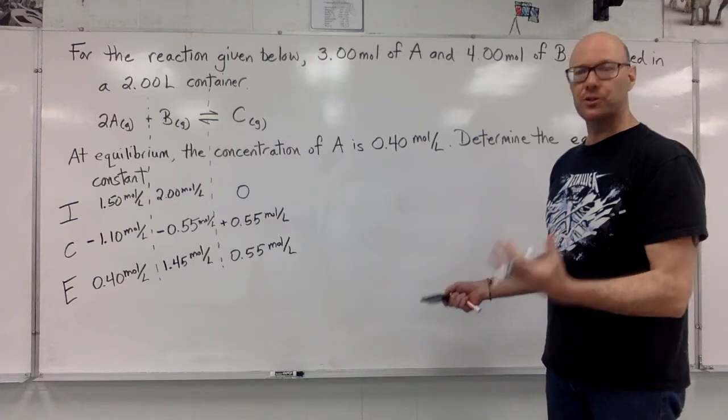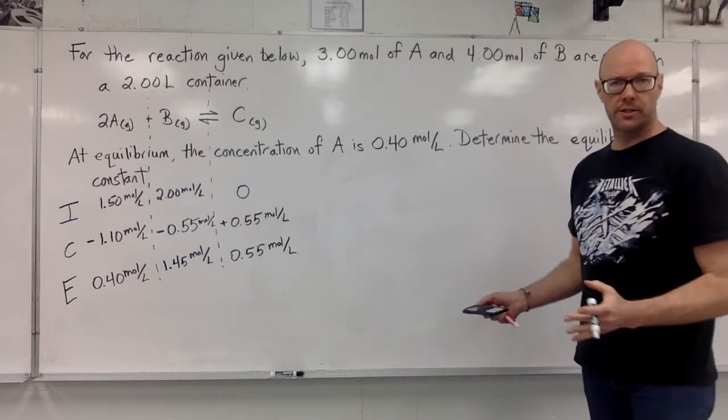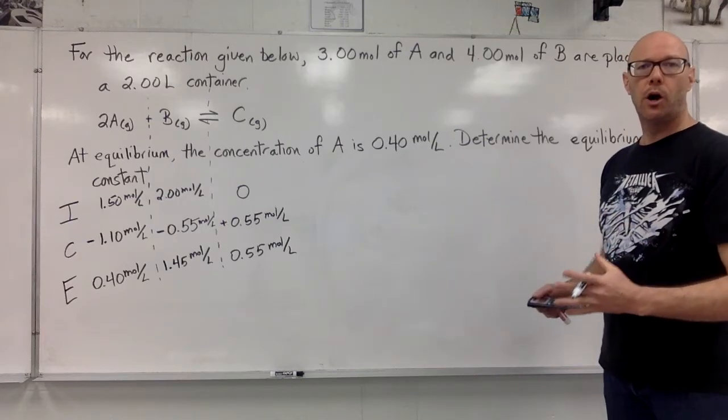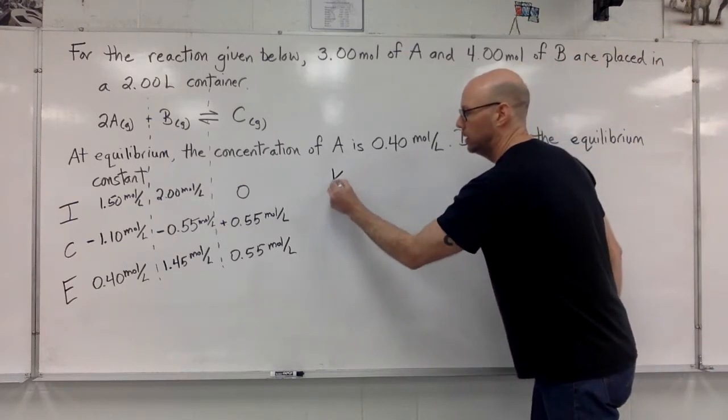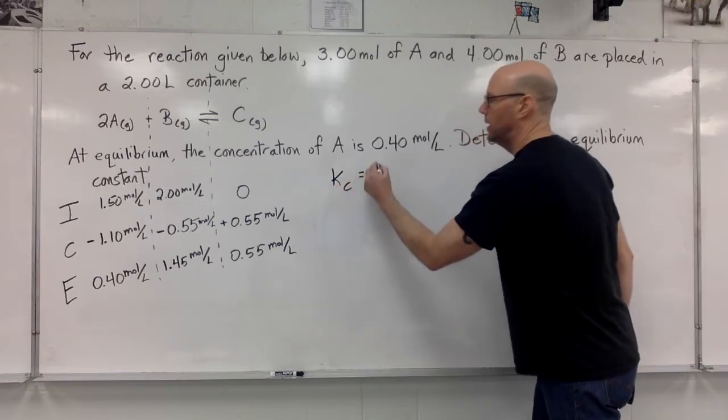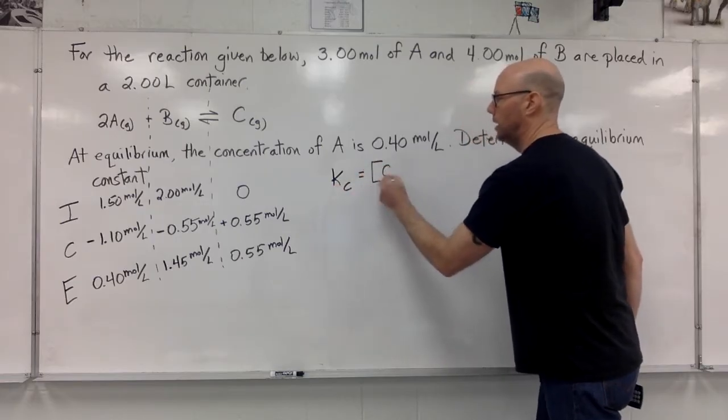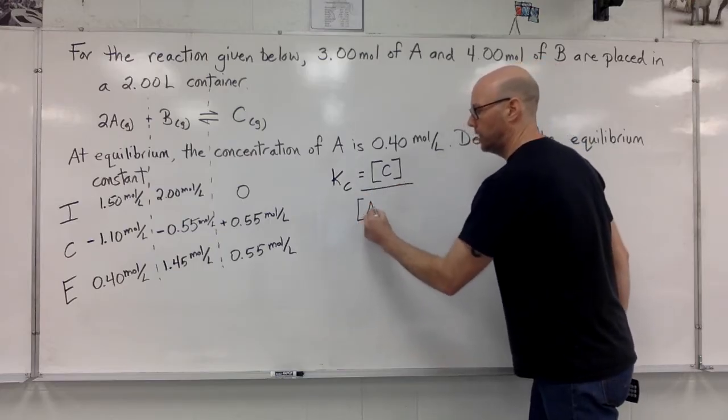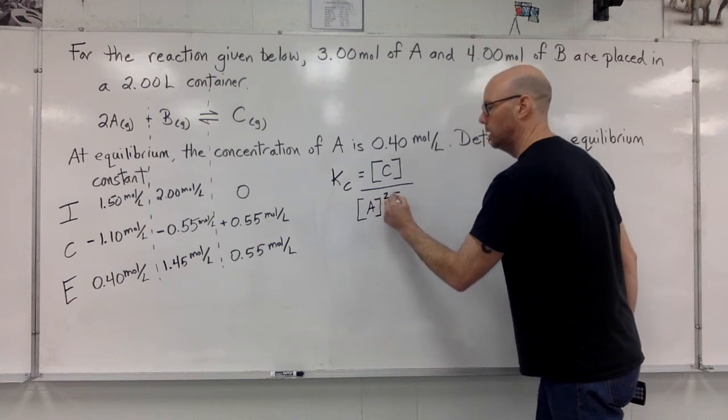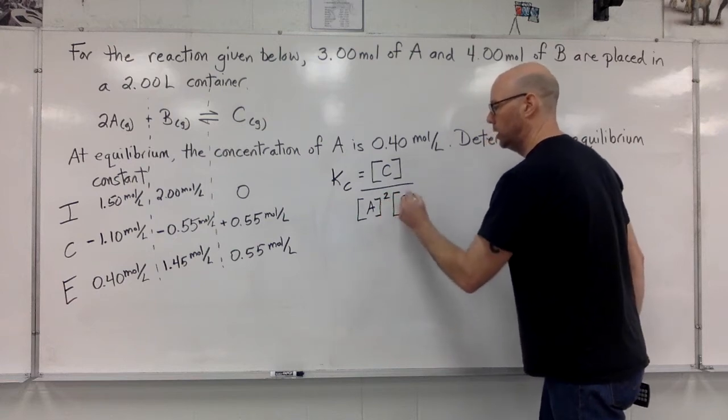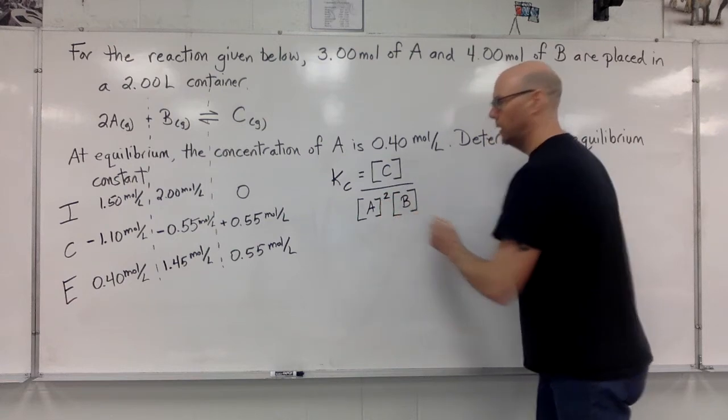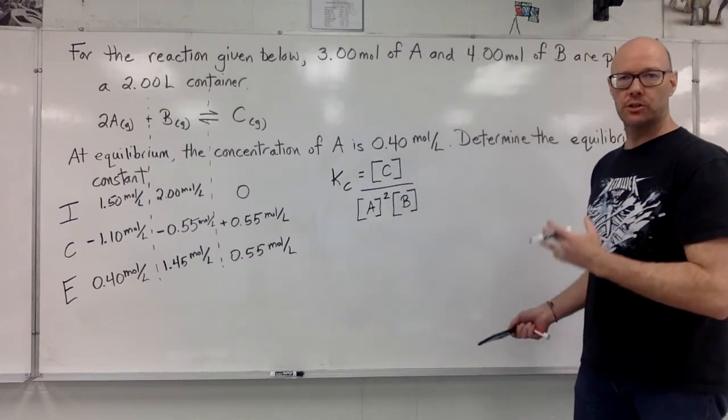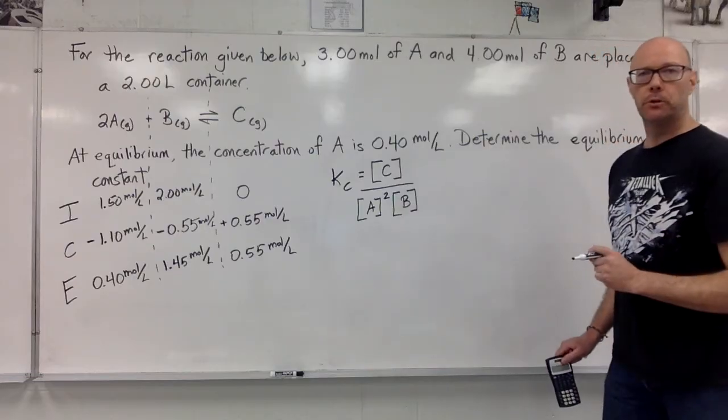Now we can proceed to answering the question, determine the equilibrium constant. To do that, what we need first is the equilibrium law expression. Here, this Kc is the concentration of chemical C over the concentration of chemical A squared multiplied by the concentration of chemical B. Now we're going to substitute our equilibrium concentrations into the equilibrium law expression.